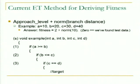Standard evolutionary testing, as defined in the academic world, mostly requires source code. Here's an example function that takes four inputs — 10, 20, 30, and 40 — and we're trying to get to a target branch. The fitness function says: is A greater than B? We follow the branch, two more branches left — two branches plus the normalization of the difference is the fitness. If fitness equals zero, we've hit the target. In my system, things get more fit as the number gets greater, which makes more intuitive sense.